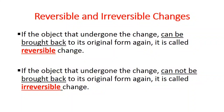If the object that undergone the change can be brought back to its original form again, it is called reversible change. And if the object that undergone the change cannot be brought back to its original form again, it is called irreversible change. So whether after the change we are going to bring back the object to its initial or original form or not, the changes are classified as reversible and irreversible changes.